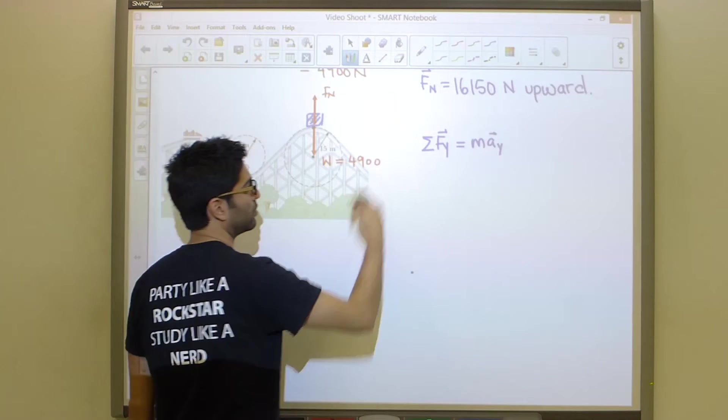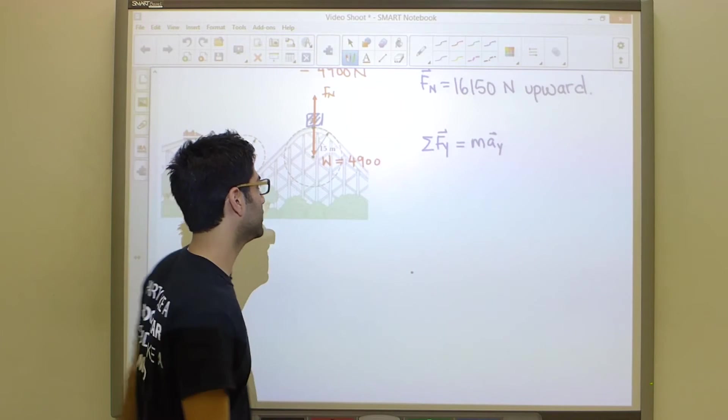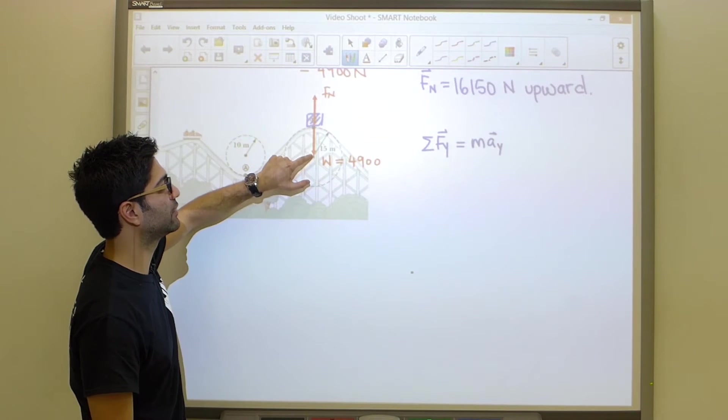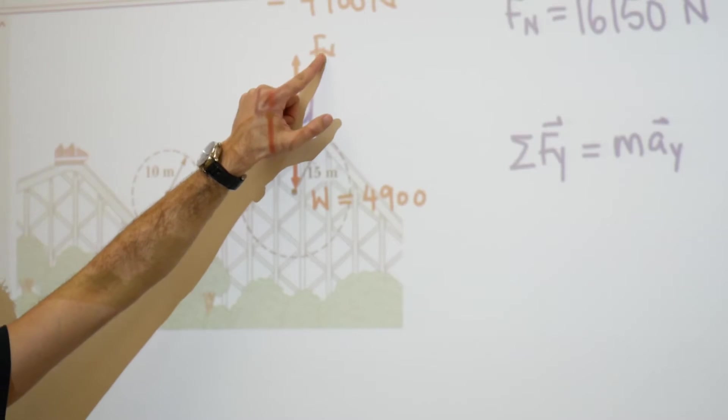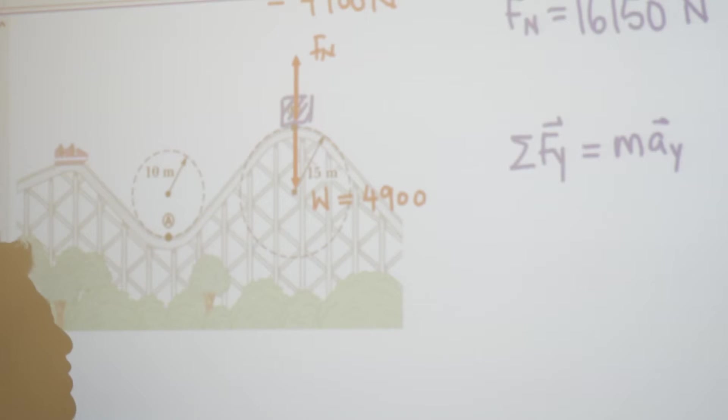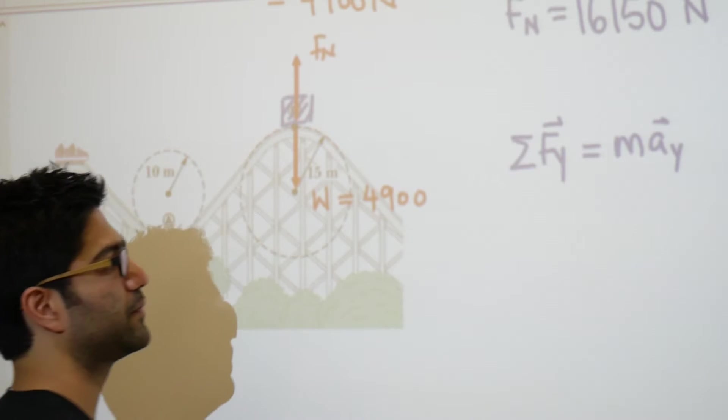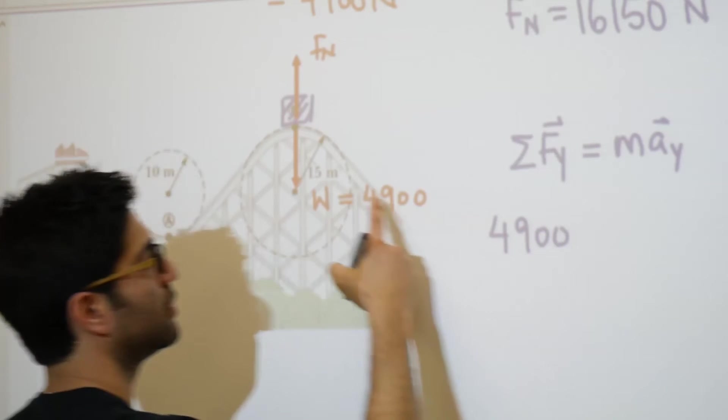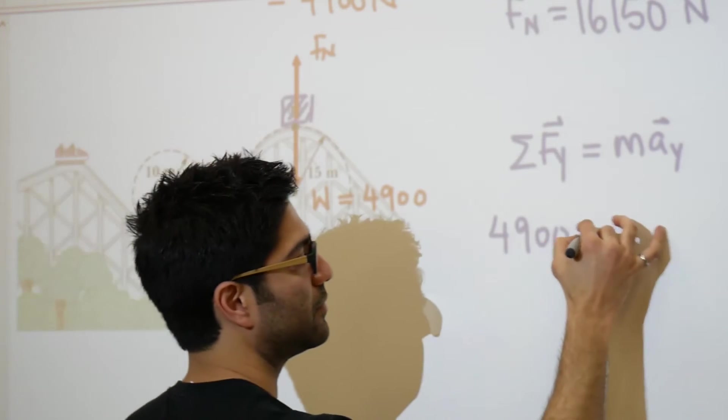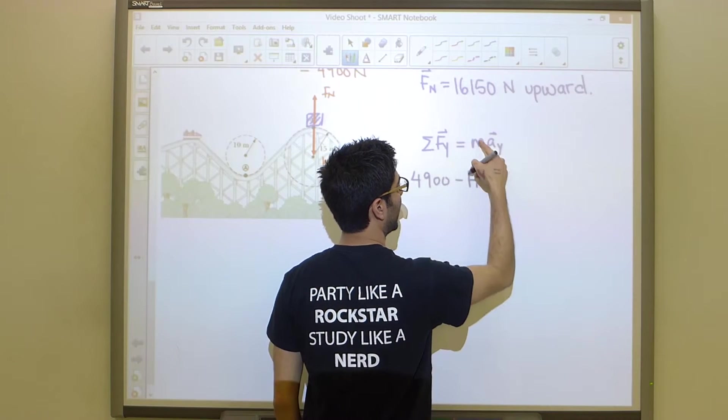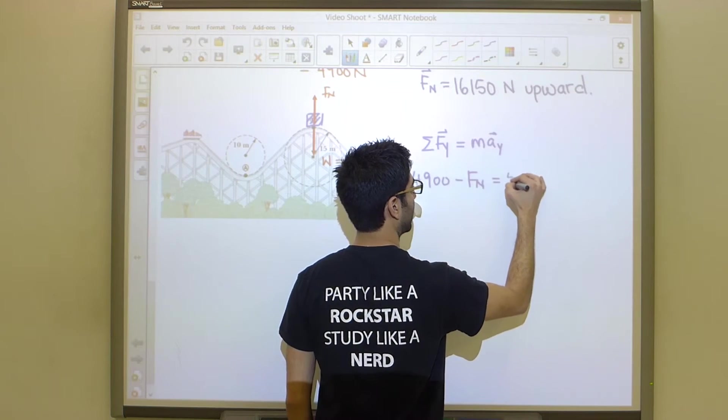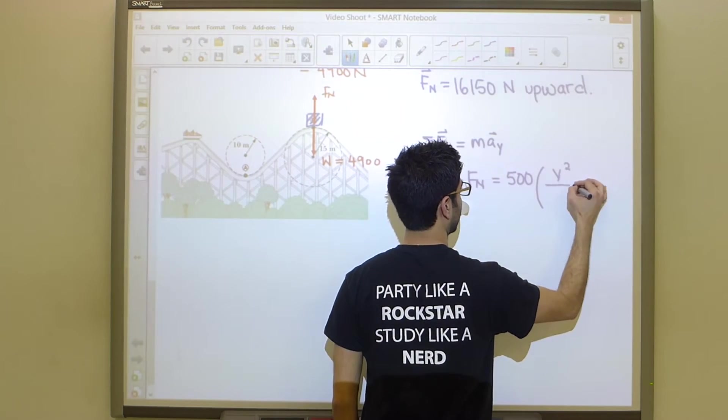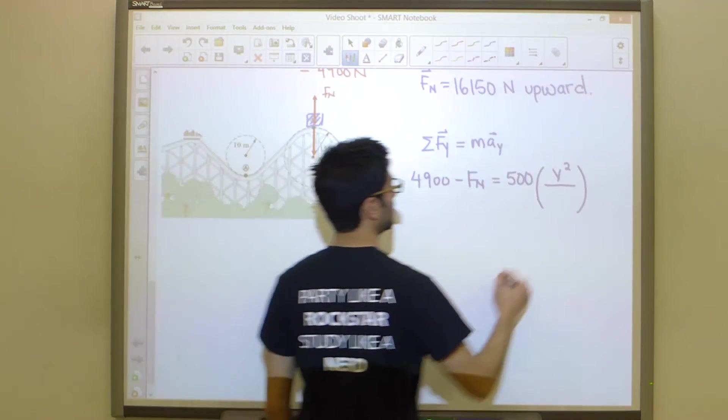If we apply the exact same equation, the sum of the forces in the Y equals m a_y, understand that acceleration is pointing downwards towards the center of the circle this time. He will be positive and he will be negative. The direction of acceleration dictates our positive direction. Plugging that in gives us our mass, 500, and our acceleration here is centripetal acceleration, so it's V squared divided by our radius, which in this case is 15.